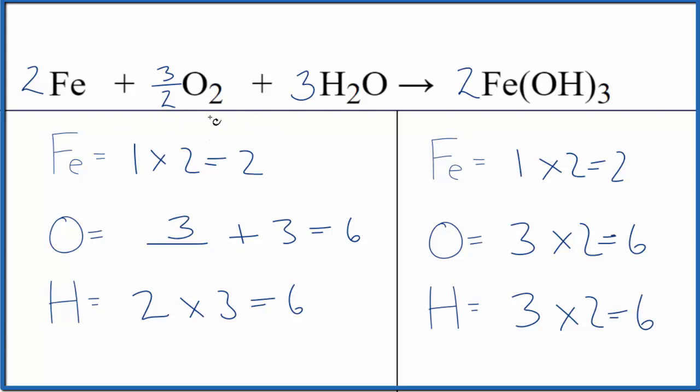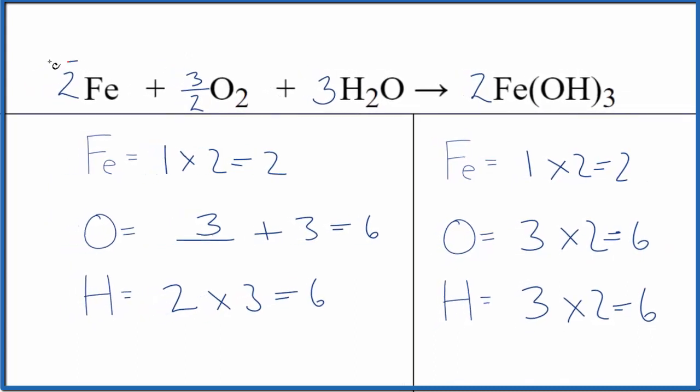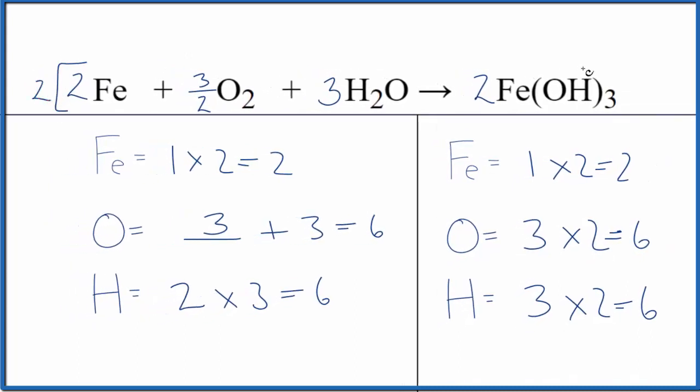However, some teachers, they don't like to have fractional coefficients. The ratio is correct. This is balanced correctly. But to get this to a whole number, all we really need to do is to multiply everything, all the coefficients by two. When we do that, we get, so now we have whole number coefficients. Again, and the ratio is the same, just some teachers, they might want you to have these whole numbers.